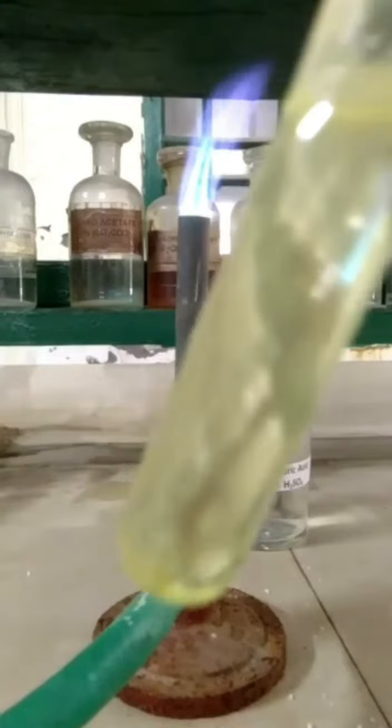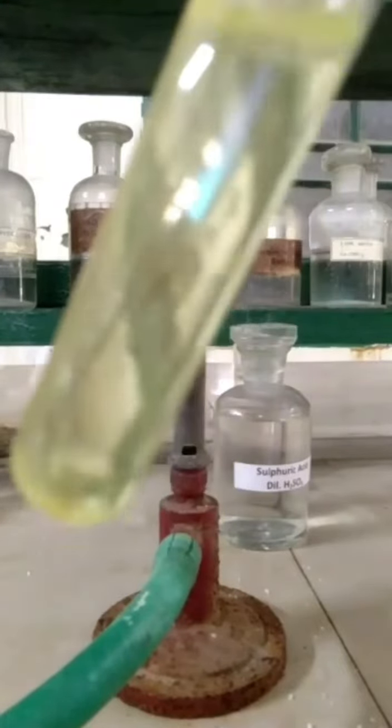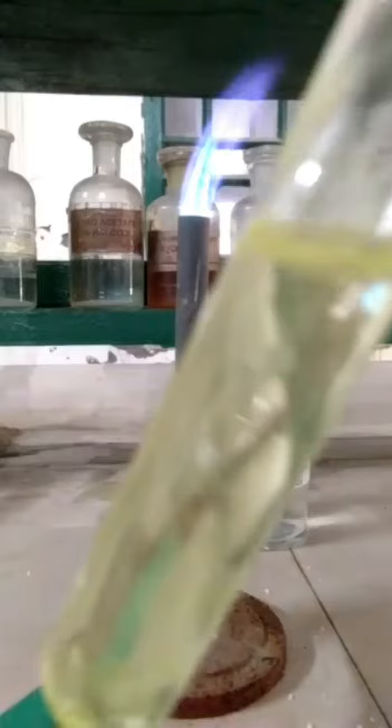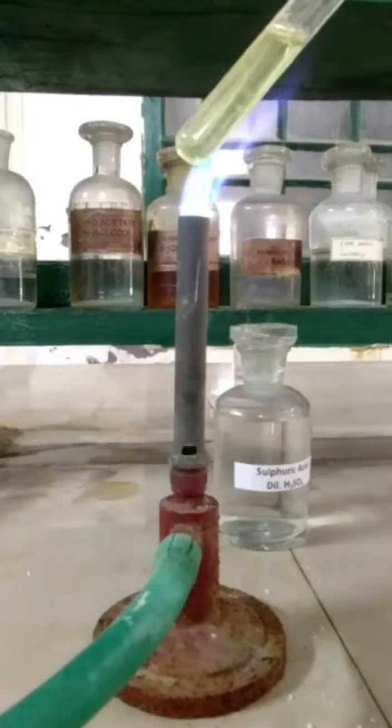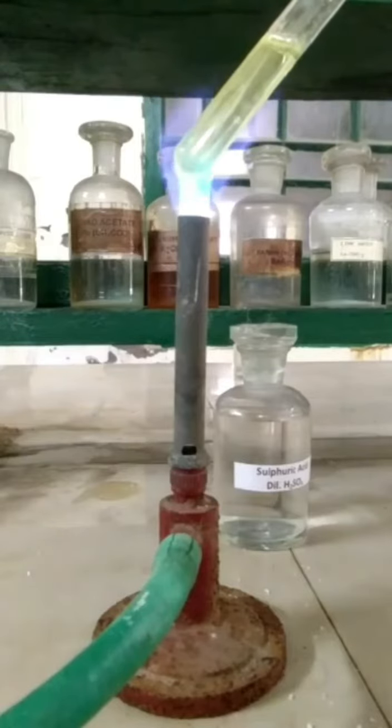In the above solution, add saturated solution of ammonium molybdate. After adding saturated solution of ammonium molybdate, heat the content over the burner and record the observation.